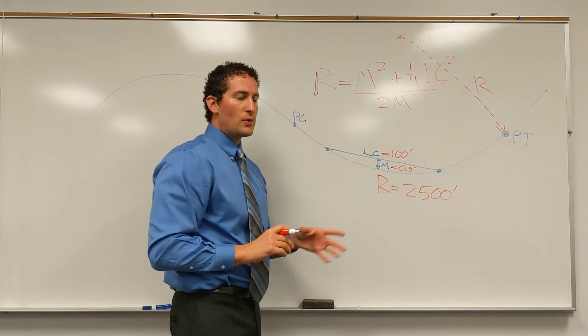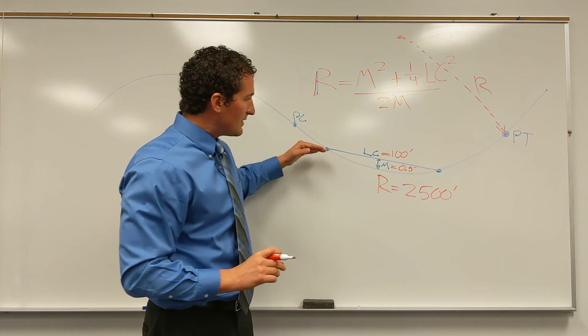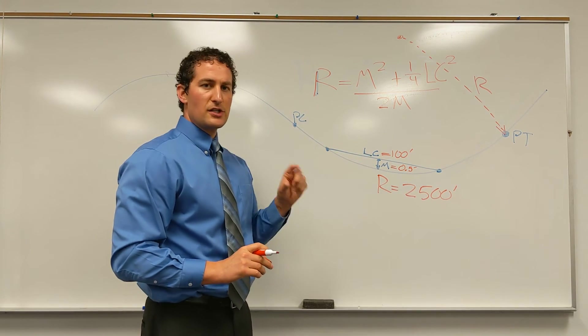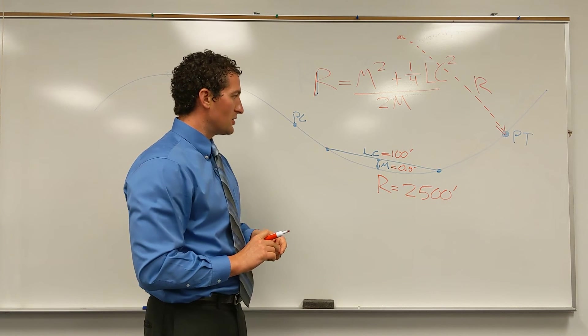So that's a pretty large radius, and that should make sense. We've got a fairly long chord here, and then a very small middle ordinate of only six inches.